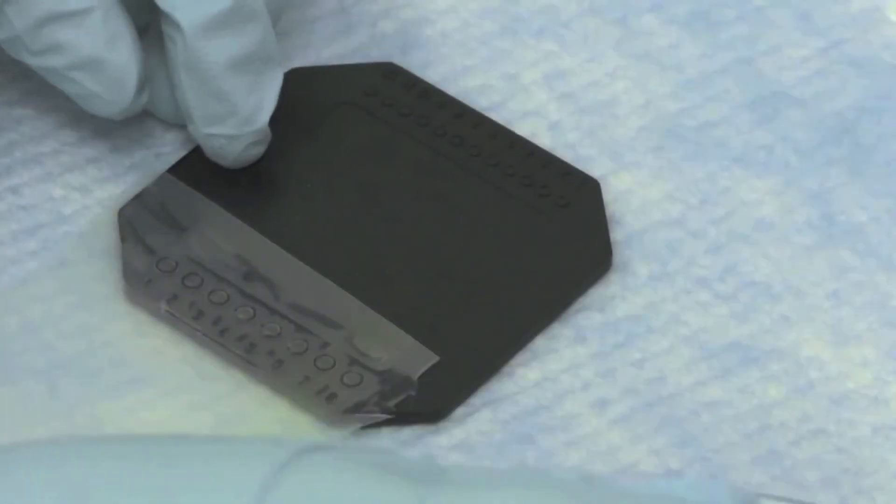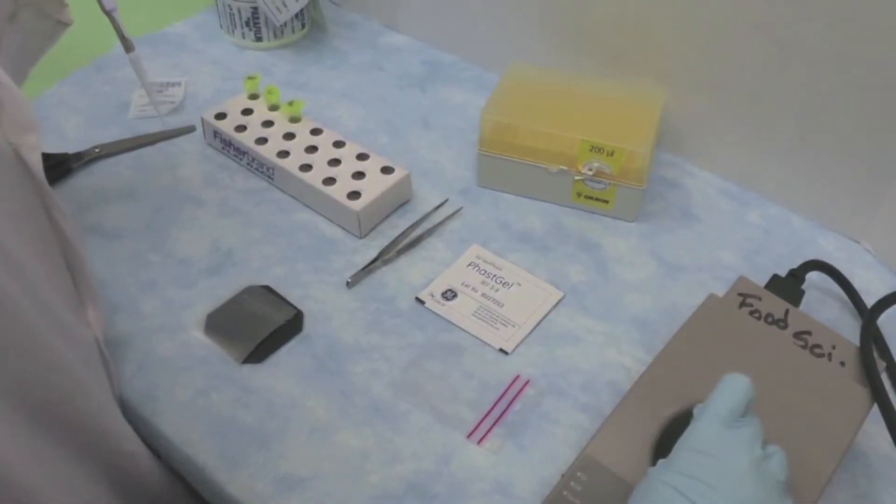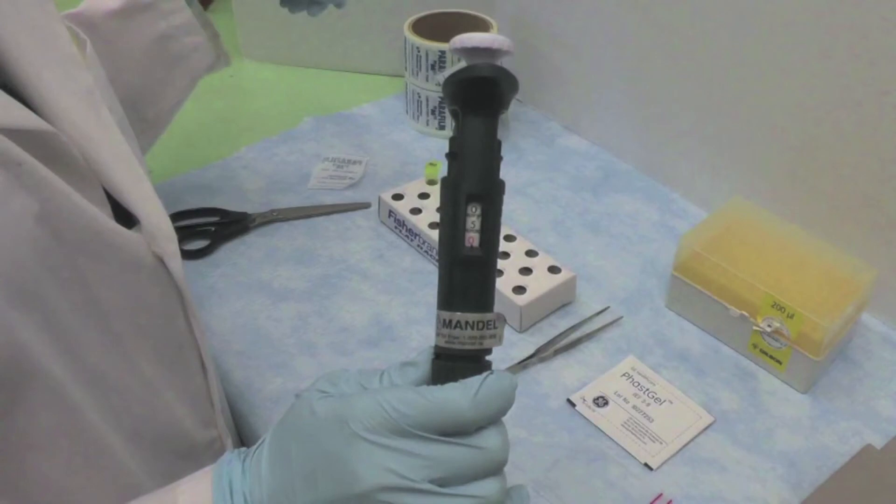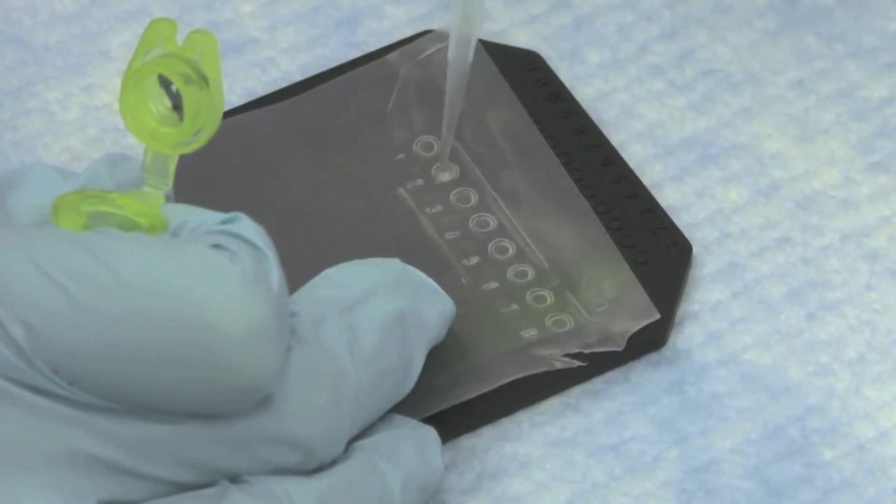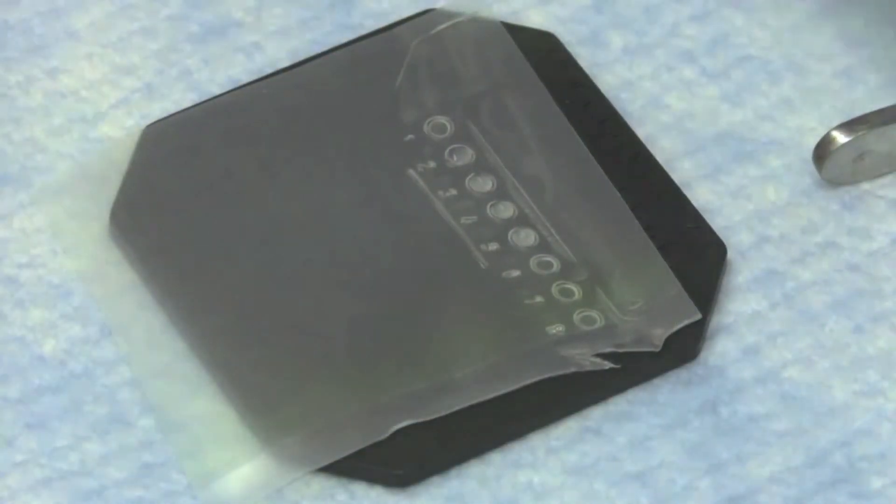Lift the protective cover on the parafilm and you can load samples onto the well. Quickly vortex the fish extracts then pipette 5 microliters of sample onto the well. The drop should form a nice dome shape without air bubbles.